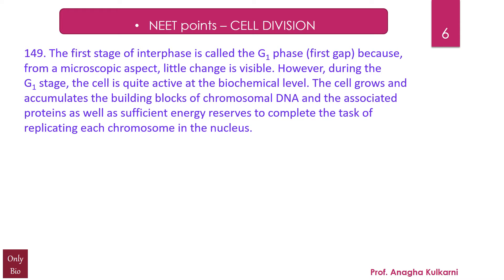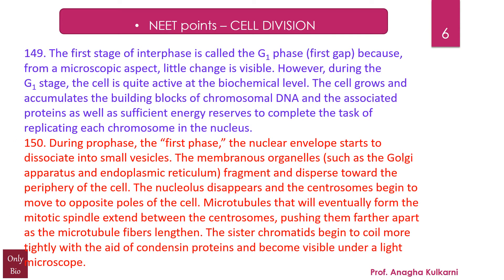During prophase, the first phase, the nuclear envelope starts to dissociate into small vesicles. Membranous organelles such as the Golgi apparatus and the endoplasmic reticulum fragment and disperse towards the periphery of the cell. The nucleolus disappears and the centrosomes begin to move to opposite poles of the cell. Microtubules that will form the mitotic spindle extend between the centrosomes, pushing them farther apart. The sister chromatids begin to coil more tightly with the aid of condensin proteins and become visible under a light microscope.